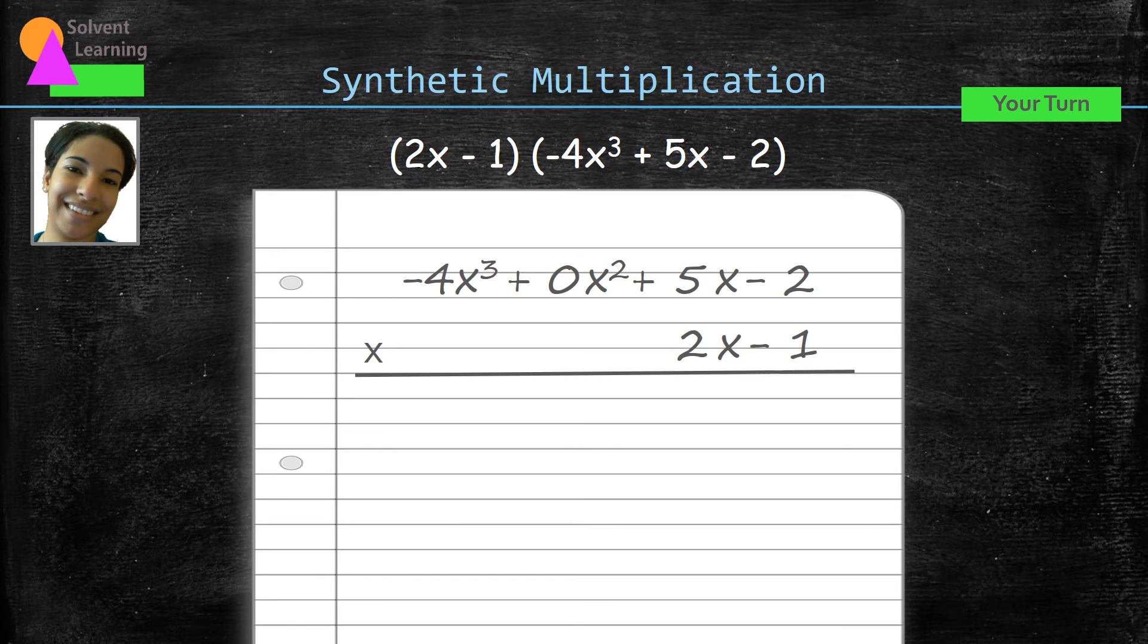Let's see how you did. Here's how we would set up this problem for synthetic multiplication. The trinomial that we started with didn't have a second degree term, so we needed to add a 0x squared in there to fill in that space. Now let's get rid of those variables, and now we can multiply these numbers.